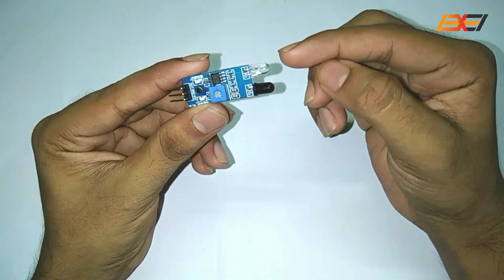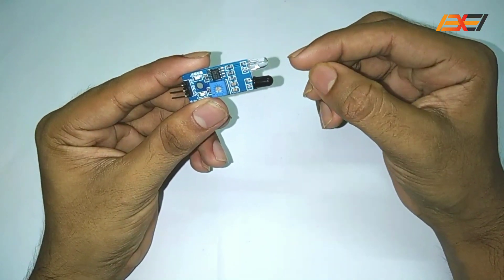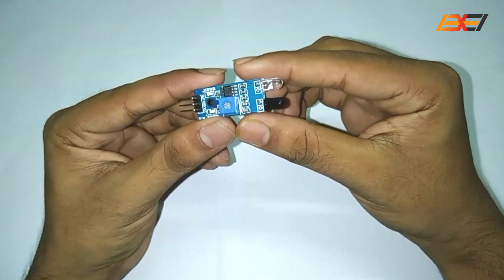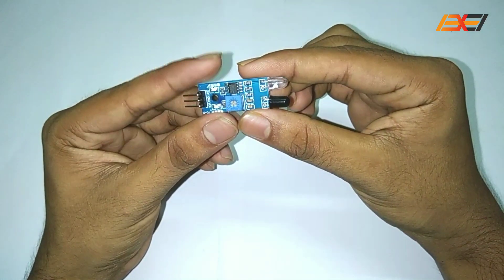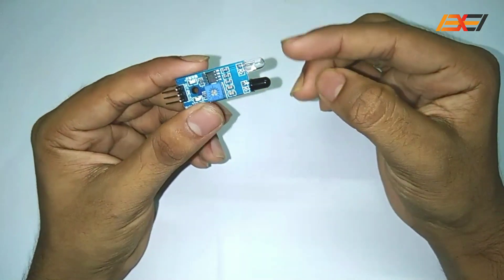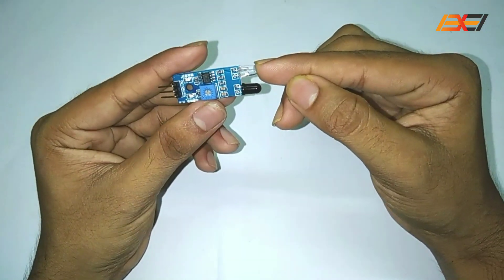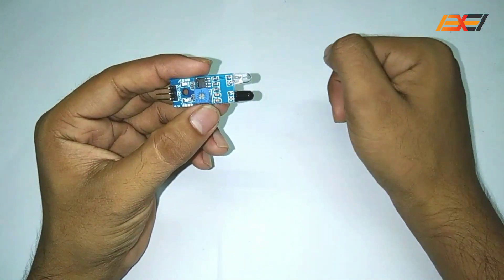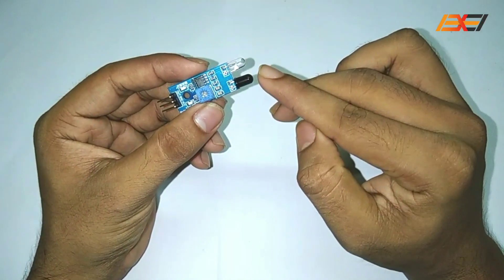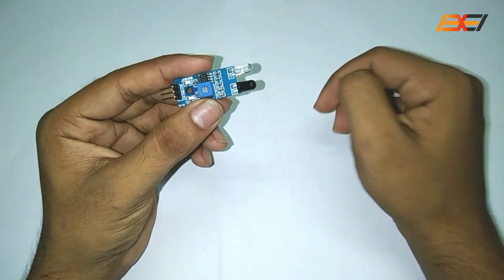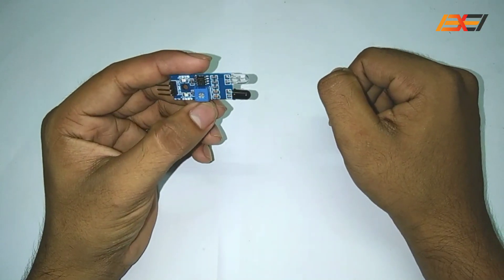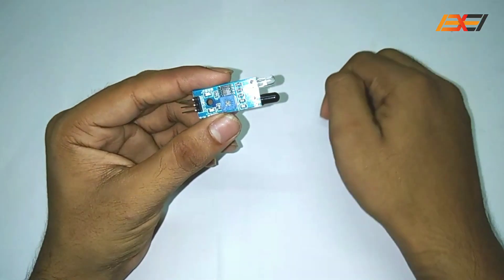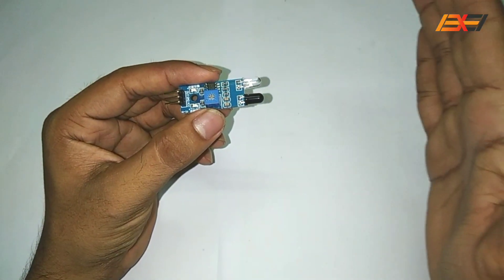You can see here two LEDs. The white one is the TxLED and the black one is the RxLED. The TxLED transmits infrared radiations and the RxLED receives those infrared radiations.